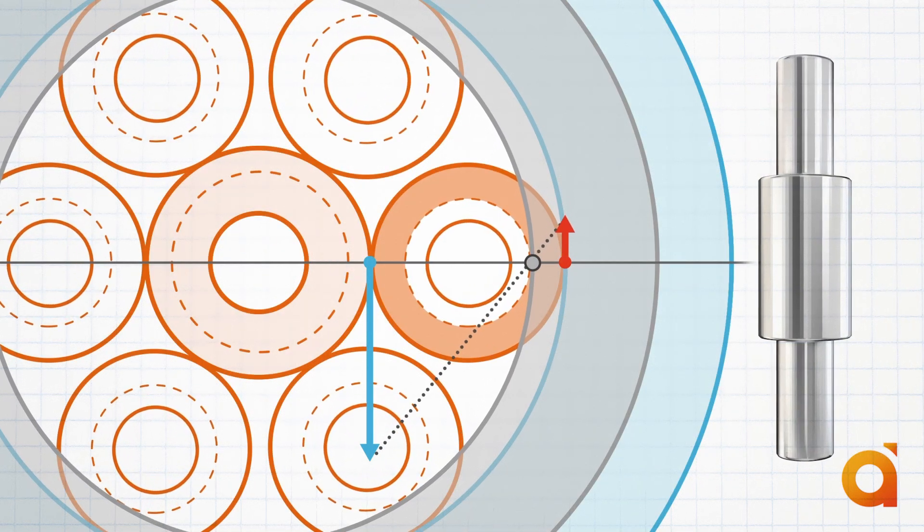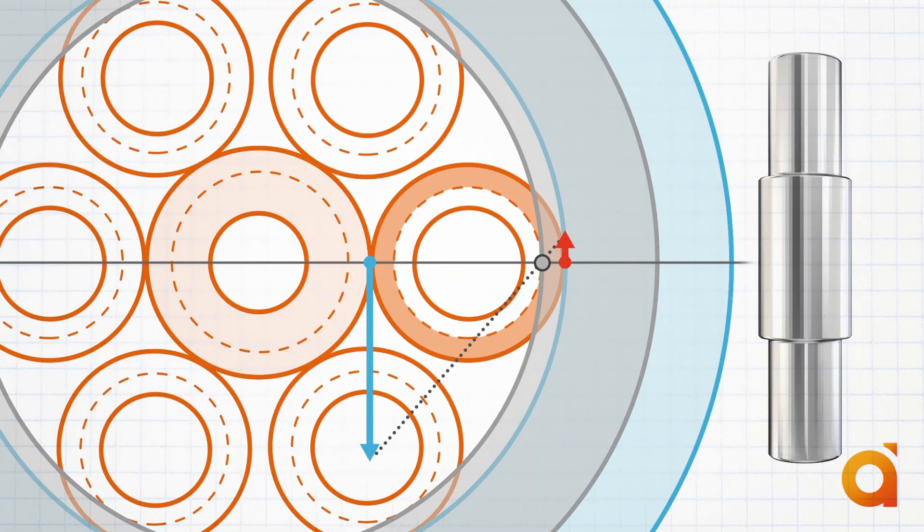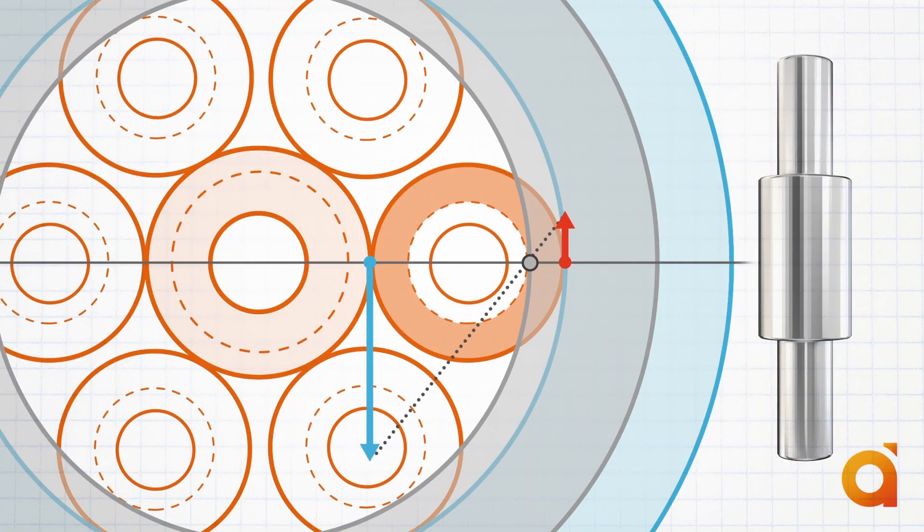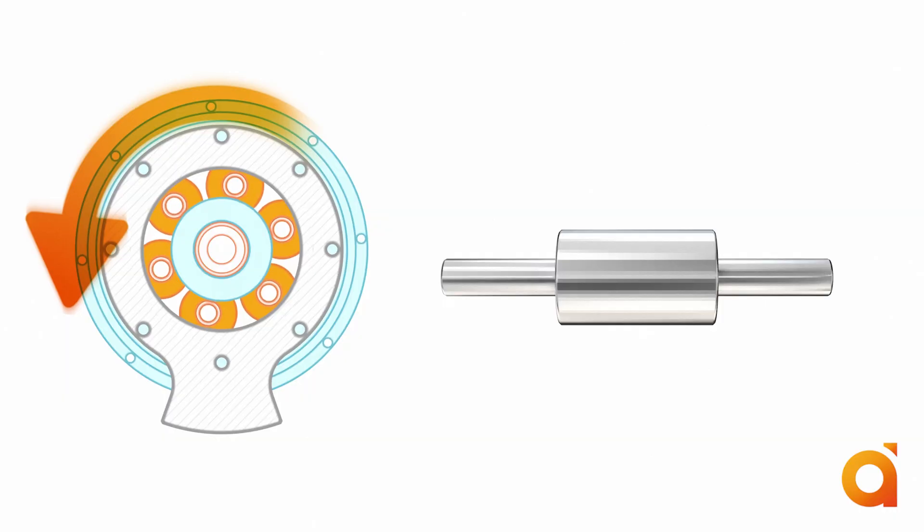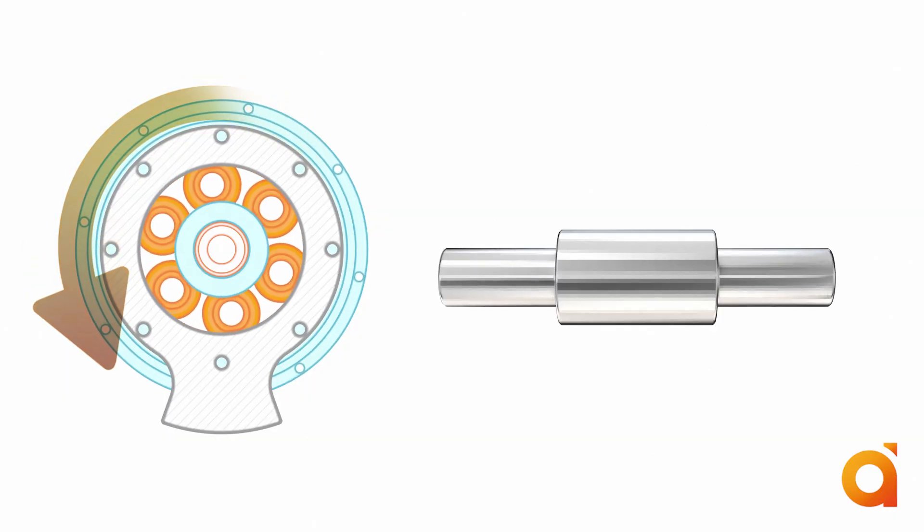By adjusting the diameters of the planets, we adjust the step size between the inner and outer sides of the planet. This step defines the reduction ratio.